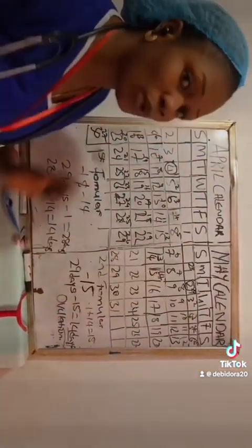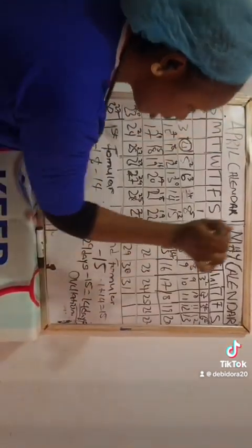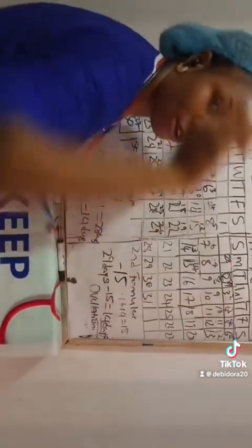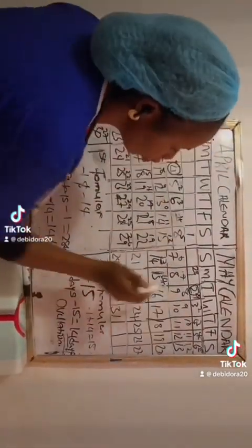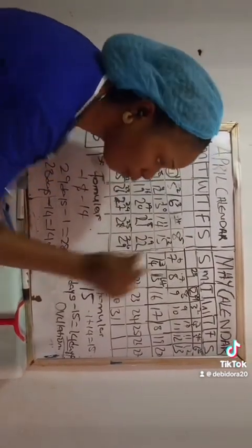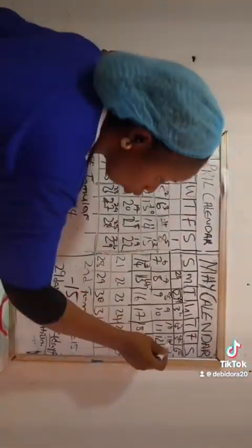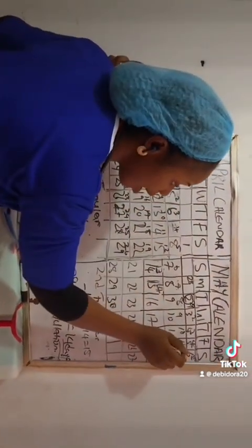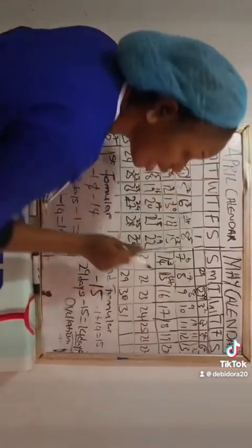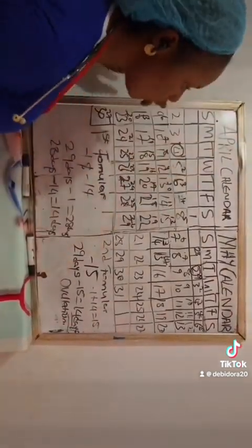Now you know your ovulation is on day 14. For those who want to conceive a baby boy, start meeting your husband from day 11, day 12, day 13, day 14. For those who want a baby girl, start from day 7, day 8, day 9, day 10 — full stop, do not go past that day. For baby girl: day 7 to day 10. For baby boy: day 12, day 13, day 14 — which is about three days before your ovulation.